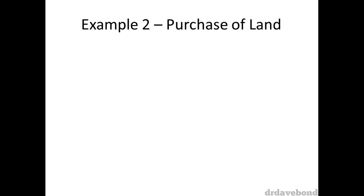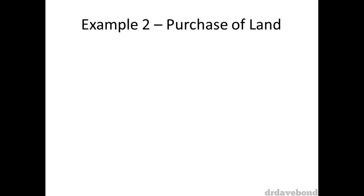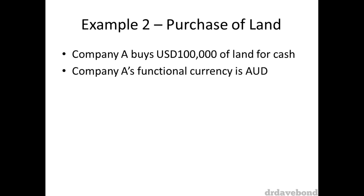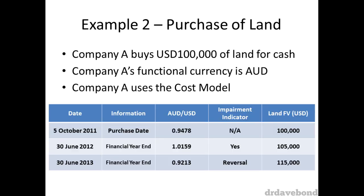Which leads us to our second example. In this case, Company A buys USD 100,000 worth of land, paying cash. Its functional currency is AUD and it uses the cost model to account for the land. This purchase occurred on the 5th of October 2011, with a 30 June year end.